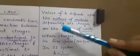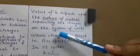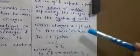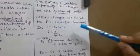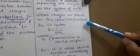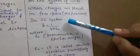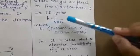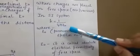K depends upon the nature of the medium as well as the system of units. When the charges are placed in free space — free space means air or vacuum — in that particular case, in the SI system, the value of K, the electrostatic force constant, is 1 by 4 pi epsilon 0.